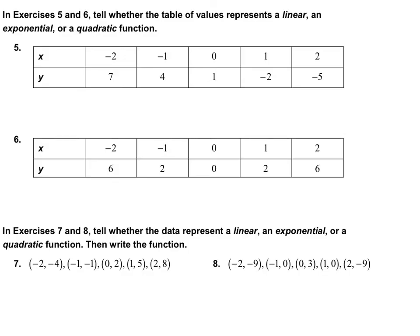In exercises 5 and 6, we tell whether the table of values represents a linear function (first differences equal), an exponential function (common ratio), or a quadratic (second differences equal). For number 5, the x-values are adding 1 each time and the y-values are subtracting 3 each time. Since the first differences are equal, this is a linear function.